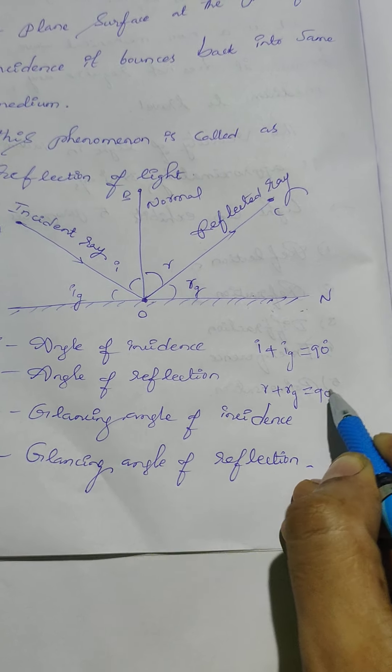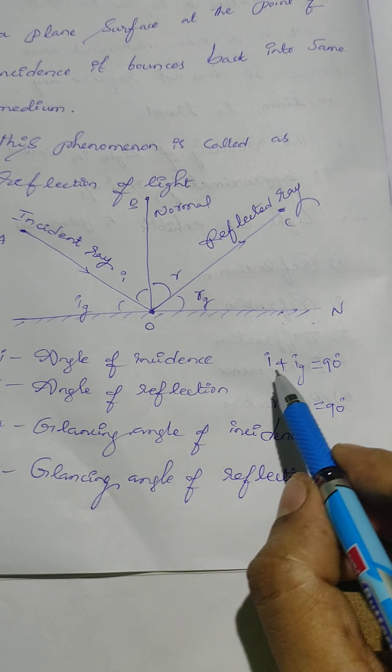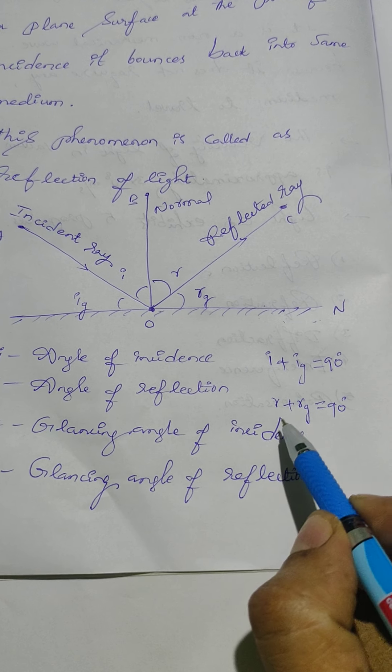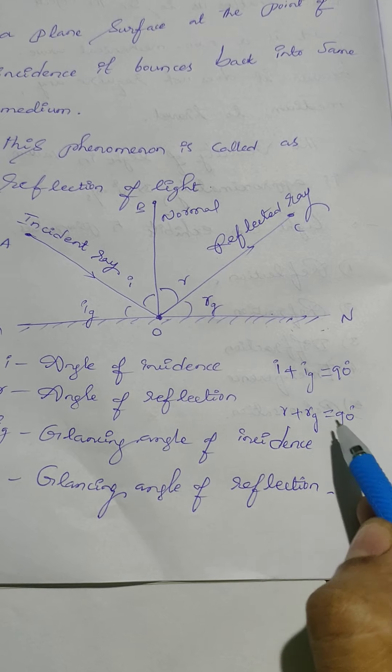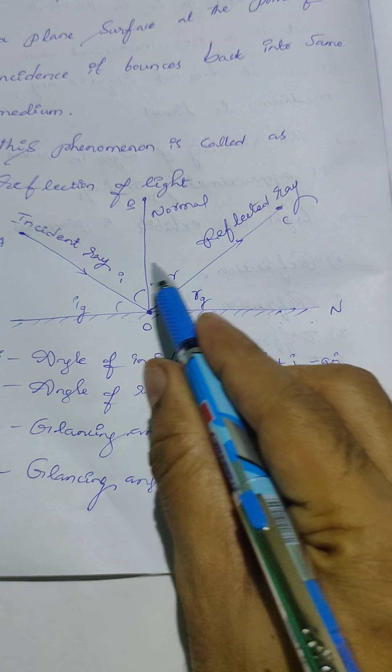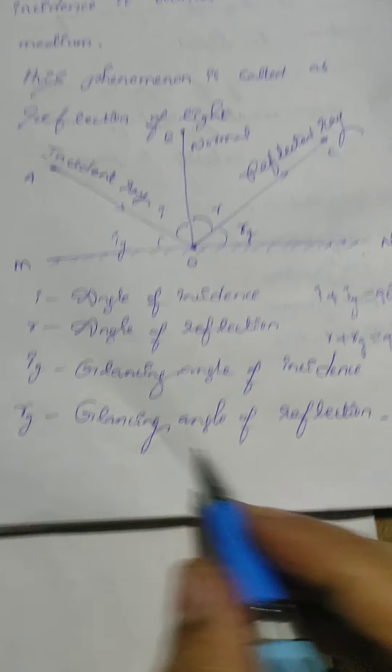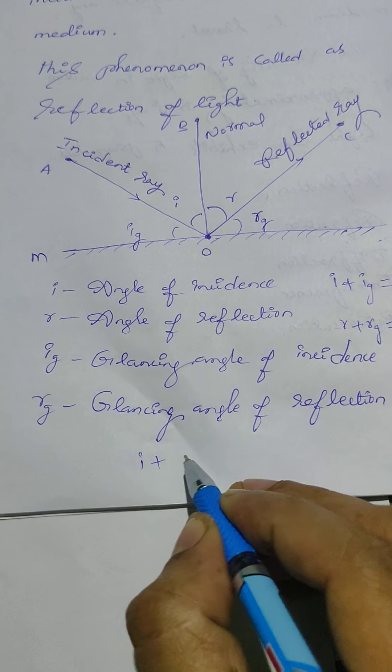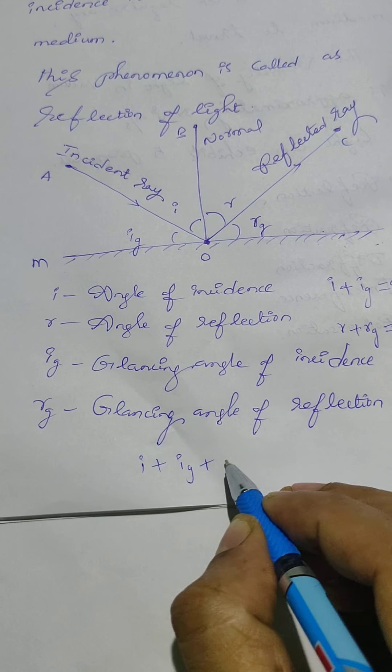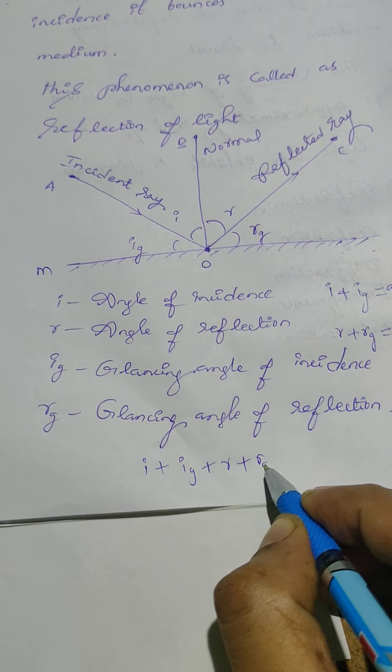Like that R plus RG also is equal to 90 degrees. So if we add I plus IG plus R plus RG, total how much? 180 degrees. So I am writing here I plus IG plus R plus RG is equal to 180 degrees.